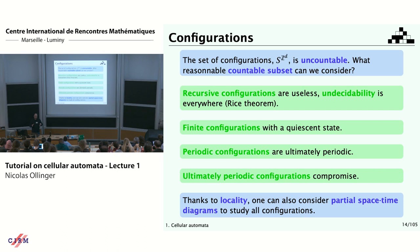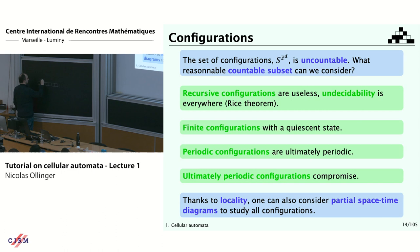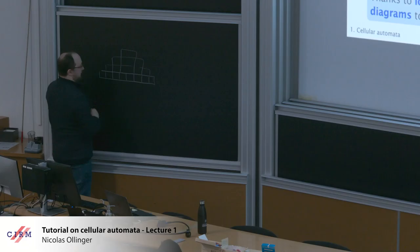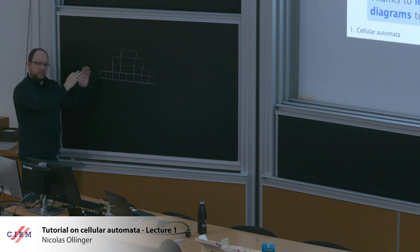You can also consider some partial diagrams or triangles of computation. If you just have a finite part of a configuration, you can still apply your local rule on this, and it will give you some kind of triangle of computation.